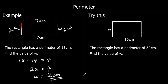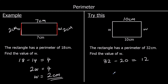And one for you to try. This time the perimeter is 32, and again we're finding W. We know we've got 10 and 10, so 20 in total — two tens are 20. 32 take away 20 is 12. So the two missing sides add up to 12, and they're equal. We can find out what they are by halving 12, and that will be six. So W is six centimeters. 10 plus 10 plus six plus six equals 32.